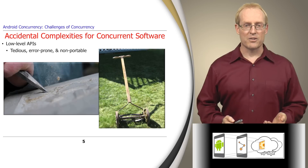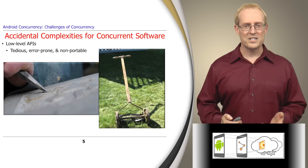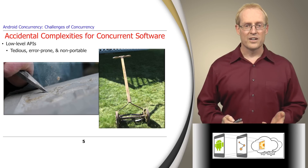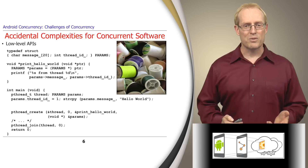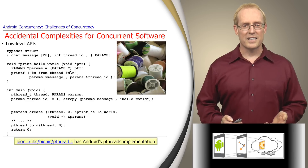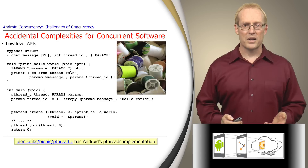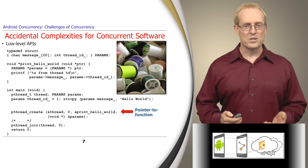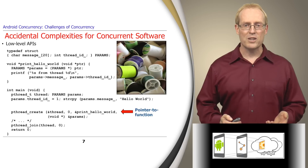A common accidental complexity is the use of low-level application programming interfaces, or APIs, which are tedious, error-prone, and non-portable when used to develop concurrent software. For example, consider the pthreads concurrency API that's available in Unix, including the versions of Linux used in Android. A number of accidental complexities are associated with using the pthreads API to write concurrent software. First, it uses low-level and error-prone data types, such as pointers to functions that are passed when the pthread is created.